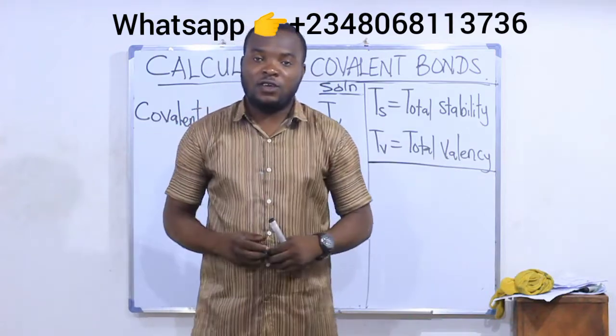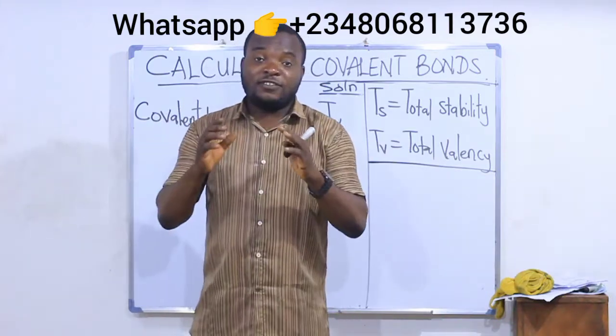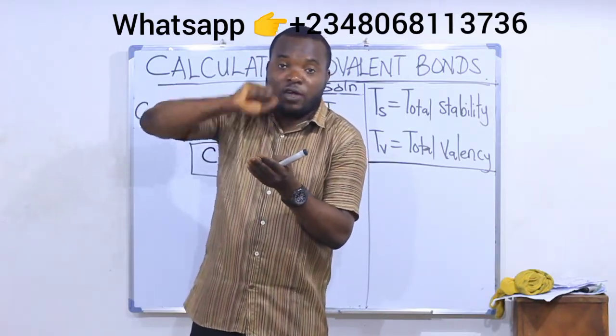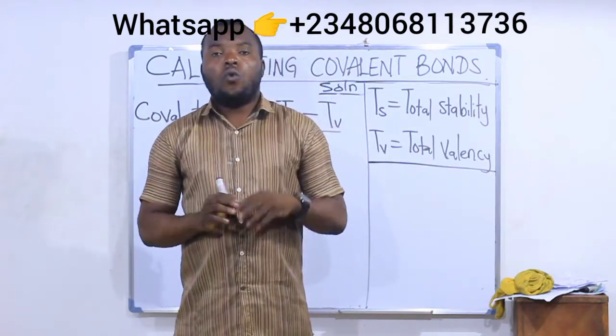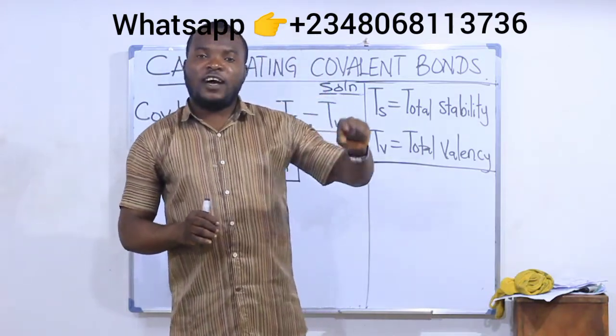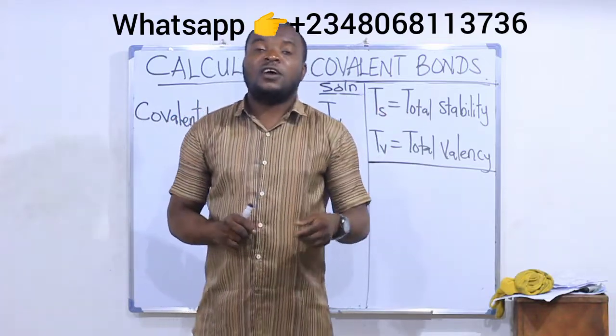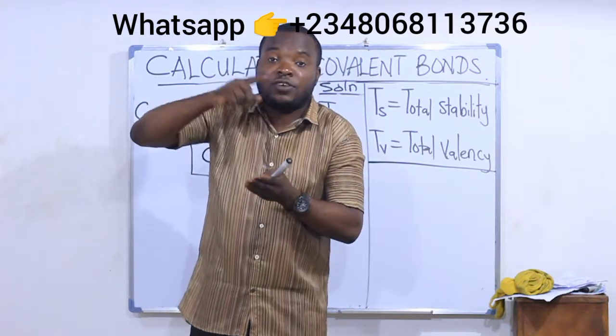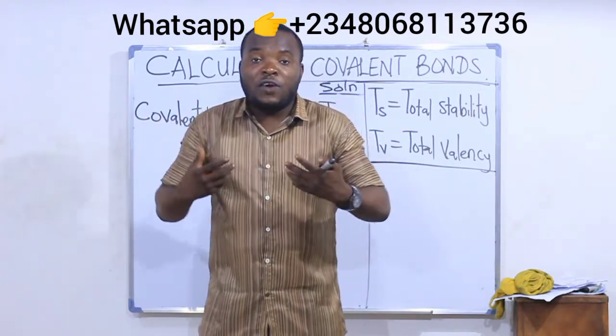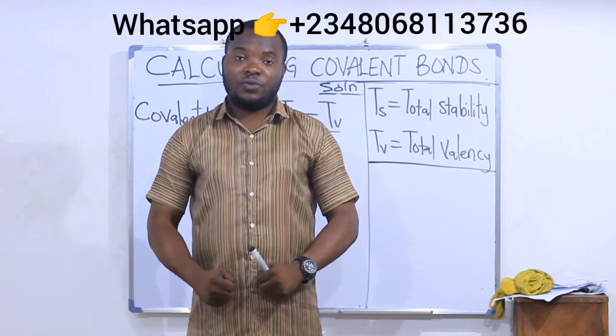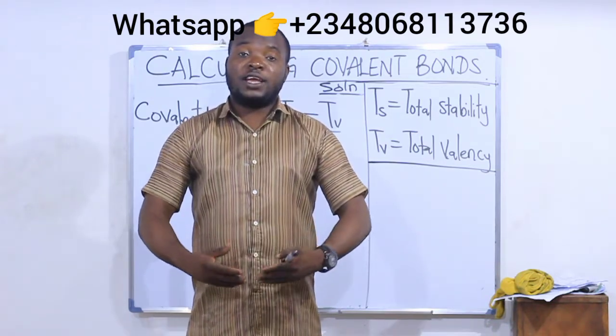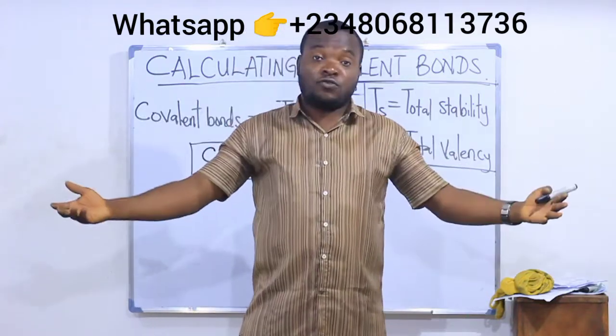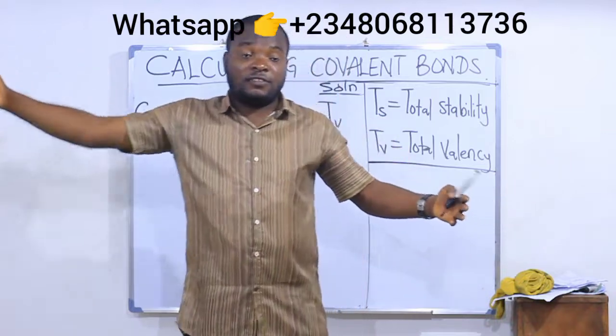And what is valency? In this topic, valency is the total amount of electrons present in the outermost shell of that atom. While stability is the number of electrons that are supposed to be at the valence shell in order for the atom to have a noble gas structure. As you know, for a substance to be like a noble gas, the outermost shell needs to have a total of eight electrons, which we call the octet rule.